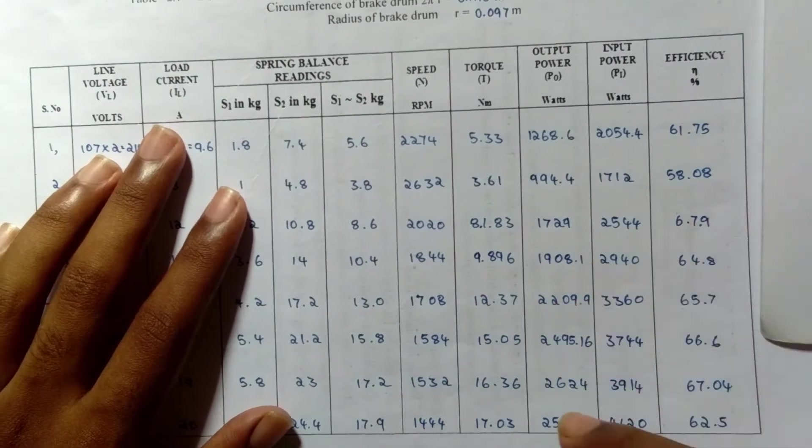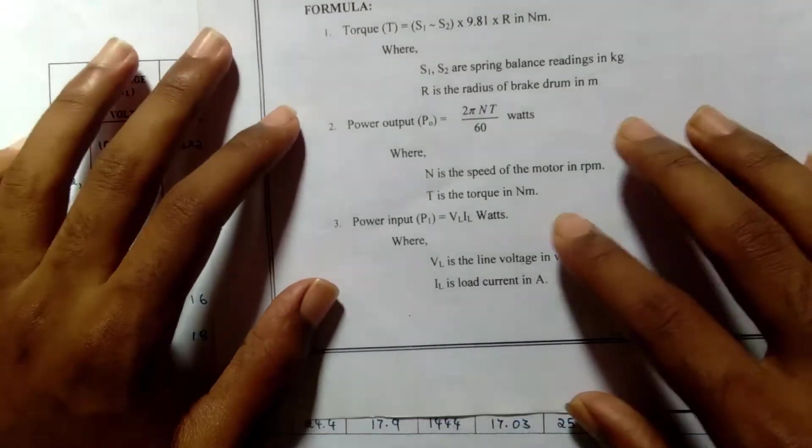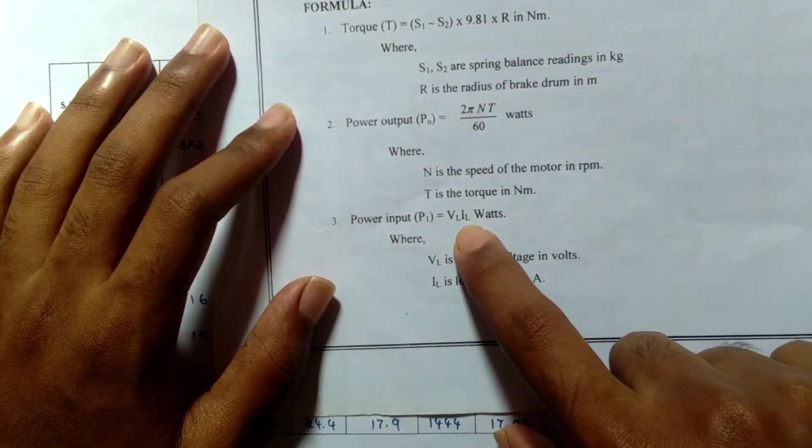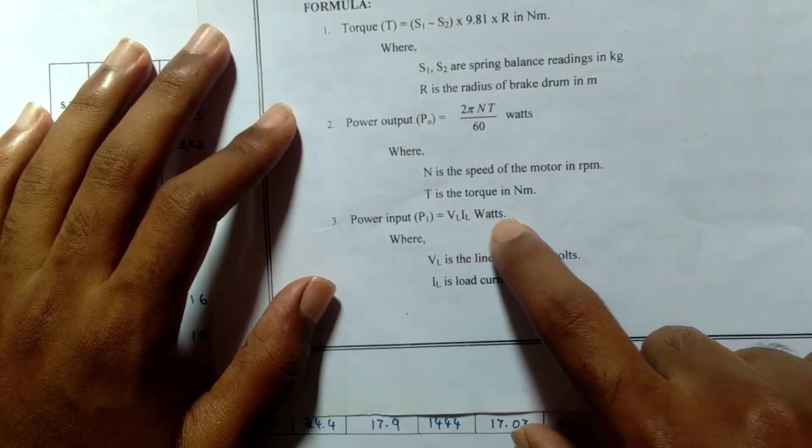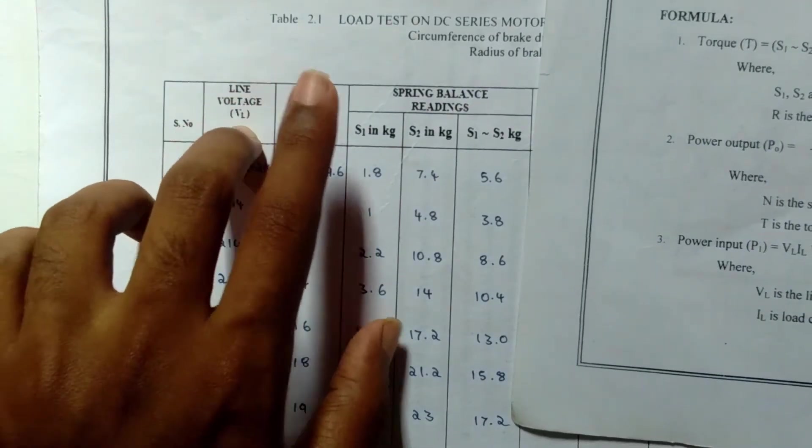T is the torque, N is the speed of the motor. The power input is equal to VL times IL. VL is the line voltage, IL is the load current.